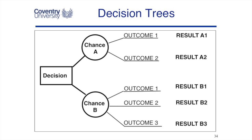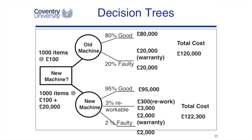In this example, we're producing components on an old machine. We know from warranty statistics that 80% of items are good and 20% are faulty — they go to the customer as faulty goods. But if we buy a new machine, the supplier says it will be 95% good and 3% of components will be reworkable. So sometimes you do have accurate percentages and costs, and by understanding the cost of the machine and components, we can work out how many components go through each leg of the decision tree and calculate total costs.